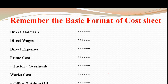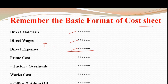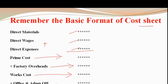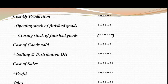Before we begin the basics of reconciliation, सबसे important है आपके cost sheet का format। Cost sheet में हम direct materials, direct wages, direct expenses लेंगे — इन तीनों को add करने पर हमें Prime Cost मिलेगा। Prime Cost में factory overheads add करेंगे तो Works Cost मिलेगा। Works Cost में office and administration overheads add करेंगे तो Cost of Production मिलेगा।